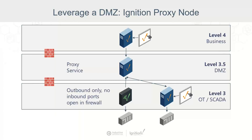In the DMZ, you can use Ignition as a proxy node — basically an Ignition server in the business that provides the application, all on-premise. There's outbound traffic from level three up to level 3.5, and outbound traffic from level four coming down to the DMZ. Firewalls in the DMZ prevent direct traffic between OT systems and the business network — they go through that proxy node. If a risk is identified, we can eliminate the DMZ, turn it off, and maintain security and local functionality. Importantly, only outbound traffic is needed — no inbound ports need to be open on the firewall for the OT network or the business network.